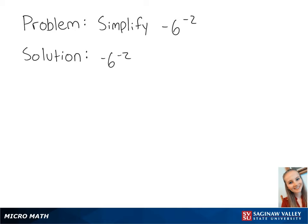Let's simplify negative 6 to the negative 2. Negative 6 is equal to negative 1 times 6, which is to the negative second power.